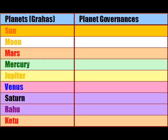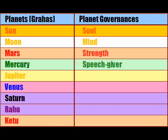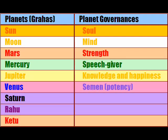Each planet governs certain aspects of your life. The Sun primarily governs the soul, the Moon your mind. Mars denotes one's strength while Mercury is the speech giver. Jupiter signifies knowledge and happiness. Venus governs potency and Saturn grief.